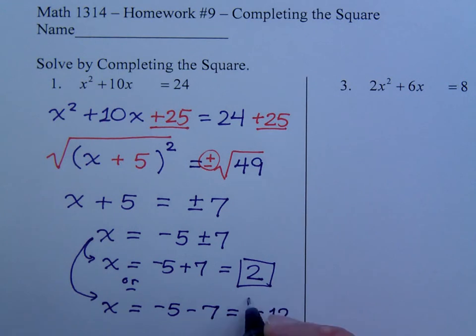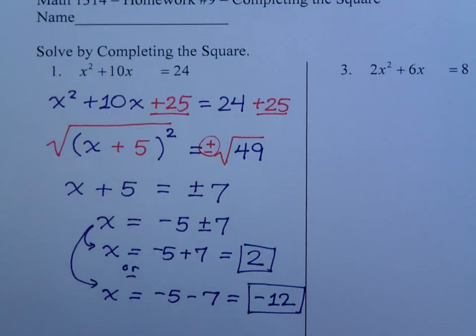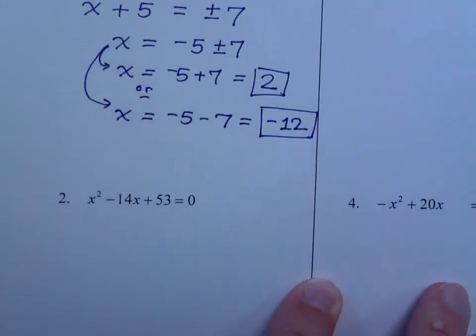Or, x equals negative 5 minus 7, which equals negative 12. So, it's quadratic and we still get the two solutions that we were looking for. So, that's how we go about completing the square.